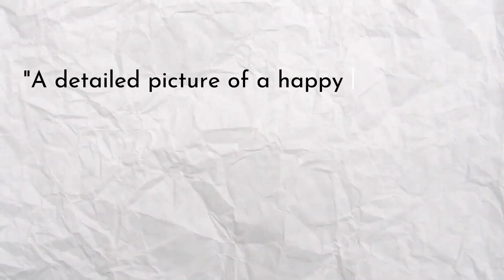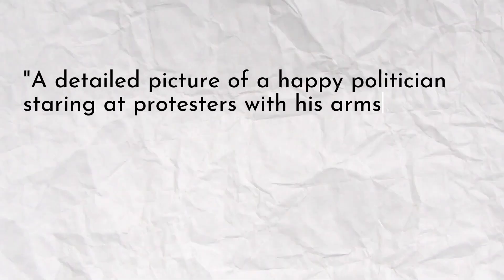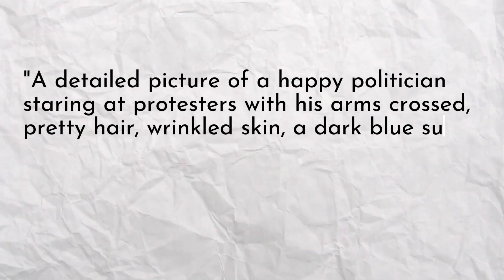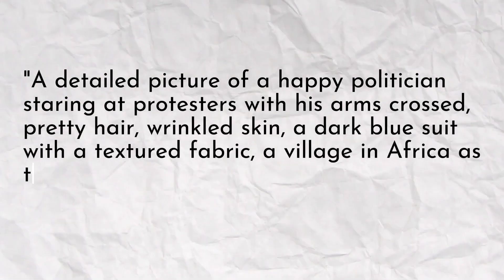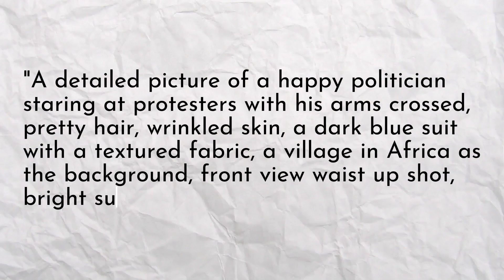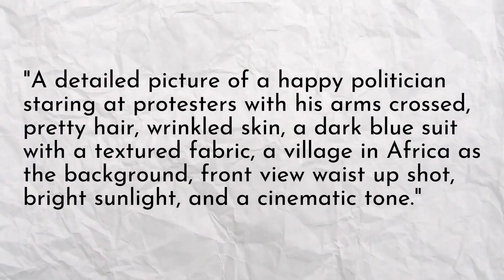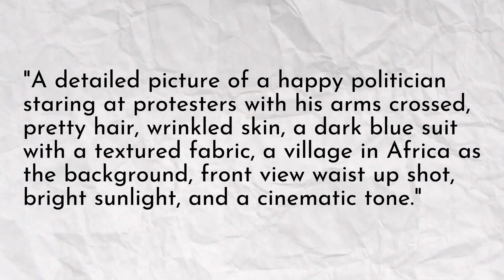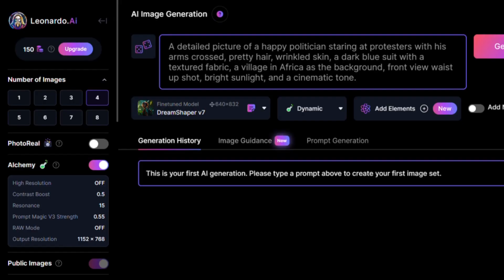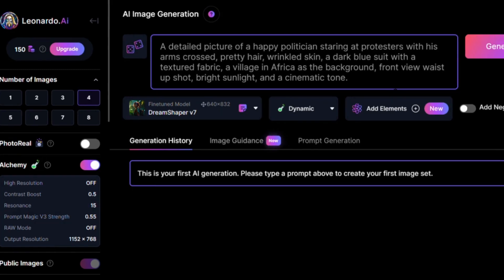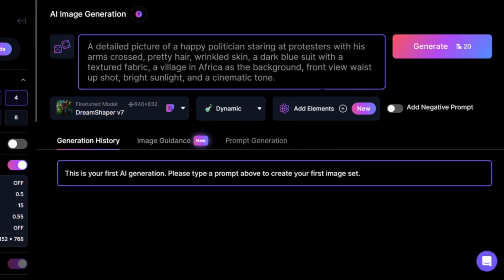You'll have to adjust the sliders manually if you're going for more detailed prompts. For example: a detailed picture of a happy politician staring at protesters with his arms crossed, pretty hair, wrinkled skin, a dark blue suit with a textured fabric, a village in Africa as the background, front view, waist up shot, bright sunlight, and a cinematic tone. The beauty of Leonardo AI is that you can give it a much more detailed prompt and it'll give you exactly what you're looking for. Press Generate and wait for it to do its magic.